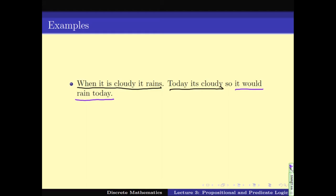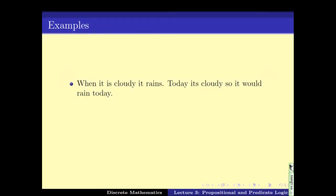Now, 'when it is cloudy, it rains' — this can be true or false. Similarly, 'today it is cloudy' can be true or false. So each of the individual statements can either be true or false.